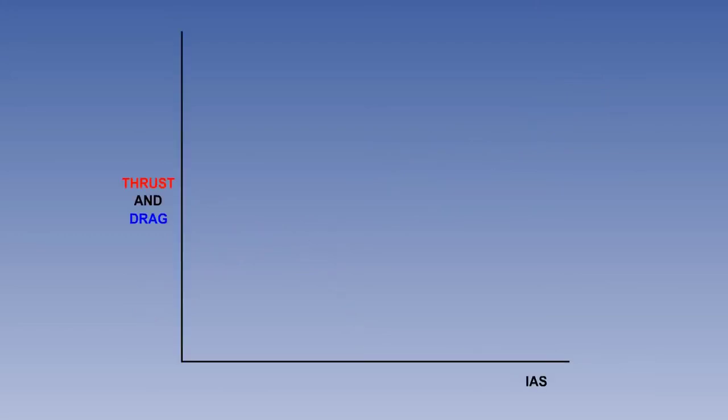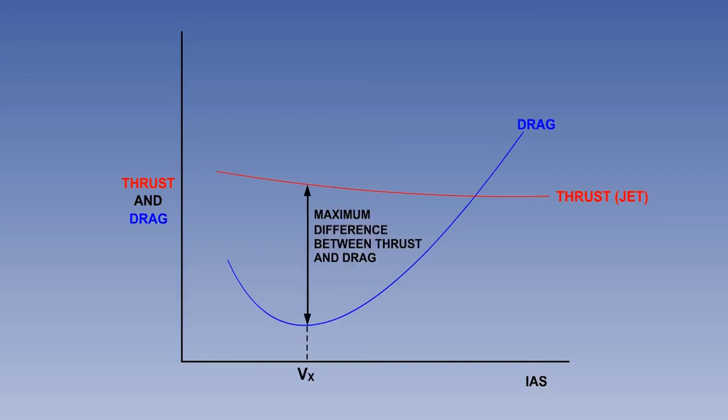The climb angle achievable depends on excess thrust, thrust minus drag, and the weight. As both drag and thrust vary with IAS, the excess thrust will be greatest at one particular speed. This is the speed for the best angle of climb, known as VX.